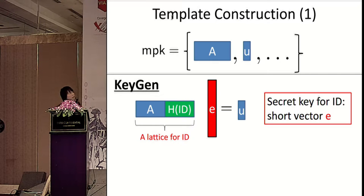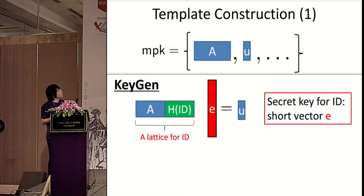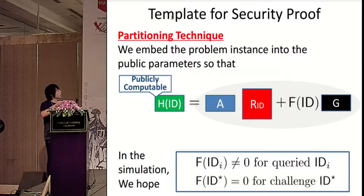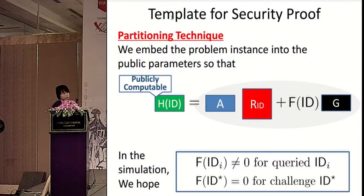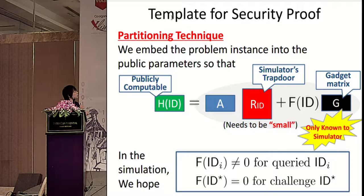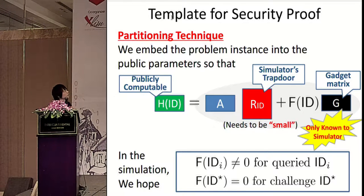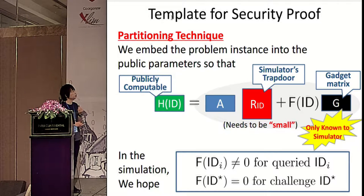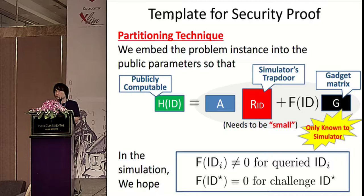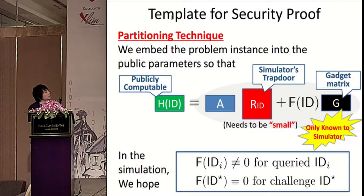For the security proof template, we use the partitioning technique for lattices — currently the only technique available. We embed the problem instance into the public parameters so that hash(ID) takes the form [A | AR_ID + F(ID)·G], where hash(ID) is publicly computable by everybody. The gray term is only known to the simulator, and R_ID is called the simulator's trapdoor. We need R_ID to be small for the simulation to work. Here G is the gadget matrix, which allows special matrix operations. F(ID) is the implicit partitioning function.